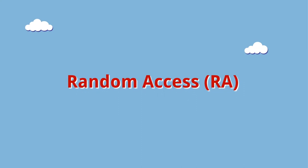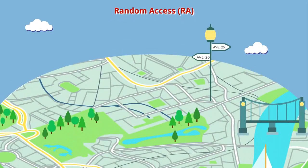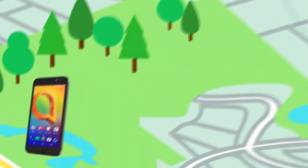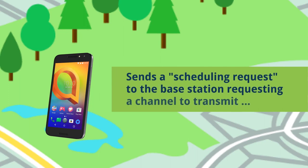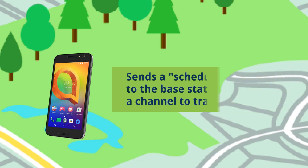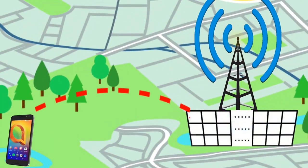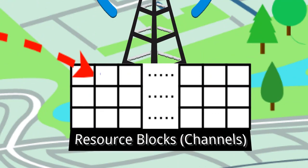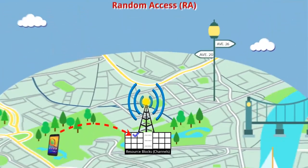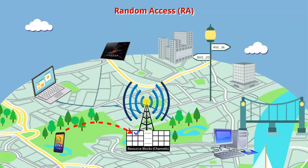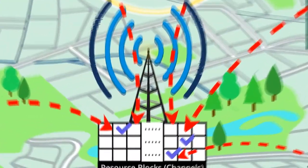As you probably already know, random access architecture comprises a base station covering a particular geographical area. Before any device can transmit, the device needs to have its own channel reserved in the base station. For this, a scheduling request has to be sent. Out of the available resource blocks, one channel will be allocated to this device. There would be other devices requesting channels as well, and random access technology allocates those channels in a random fashion — hence the name.